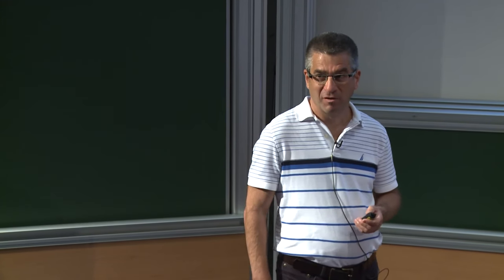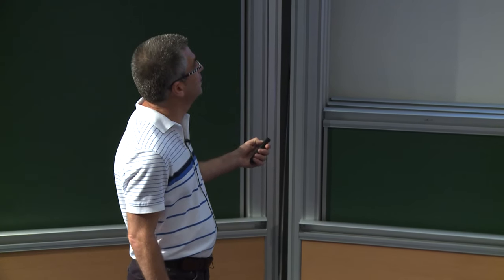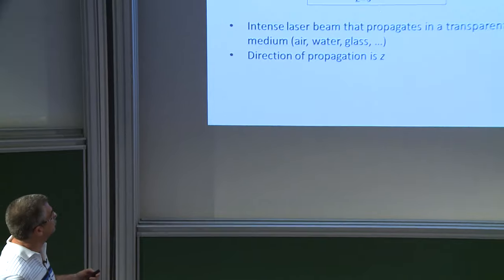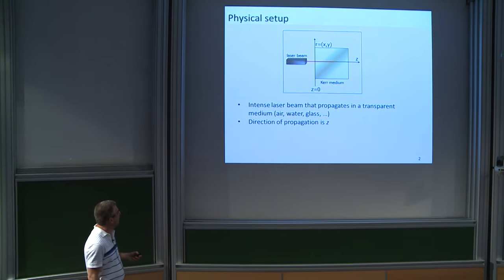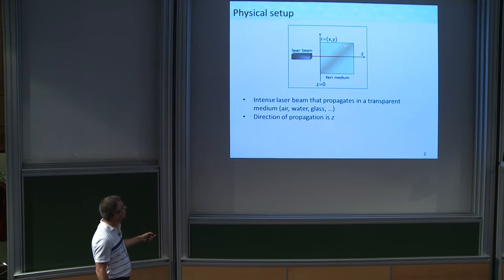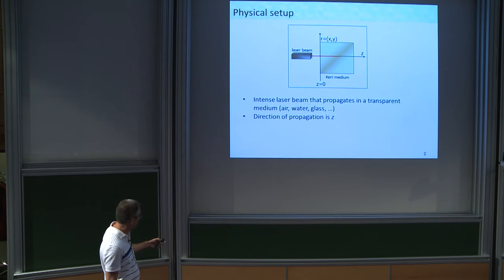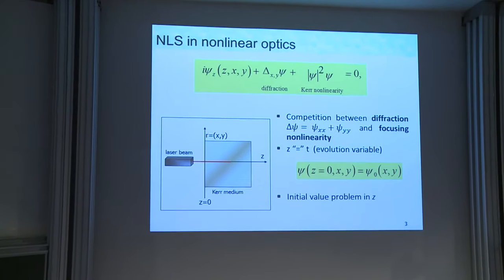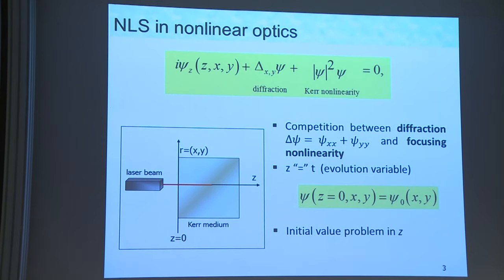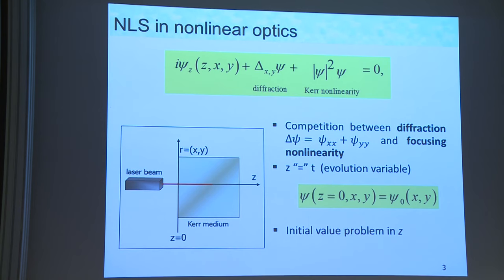Let me begin with the physics. A laser beam propagates in the z direction through some transparent medium — air, glass, water, whatever. The direction of propagation is z. It enters the nonlinear medium and starts at z equals zero. The equation of propagation to leading order is a two-dimensional cubic NLS. We have the diffraction terms, which try to make the beam wider with propagation, and the Kerr nonlinearity, which tries to make the beam narrower. So we have this competition between focusing nonlinearity and diffraction.